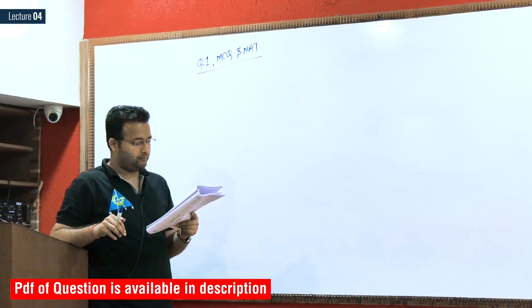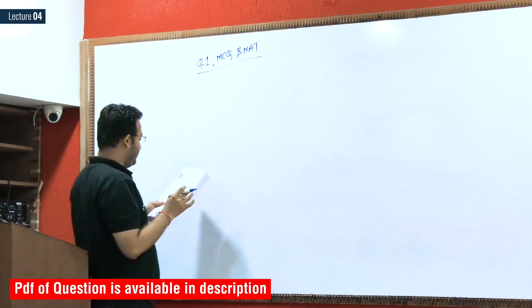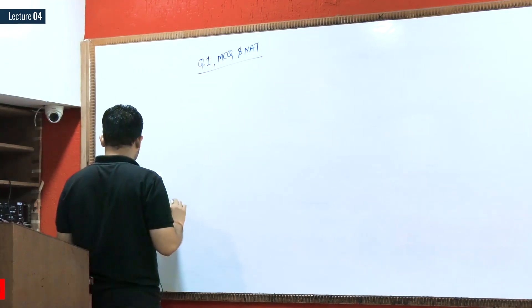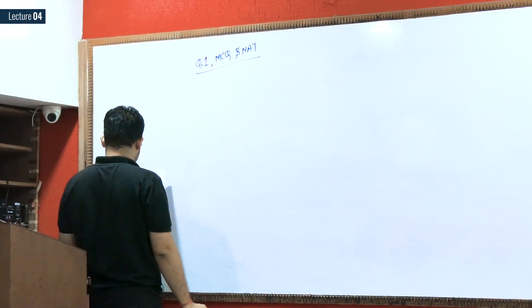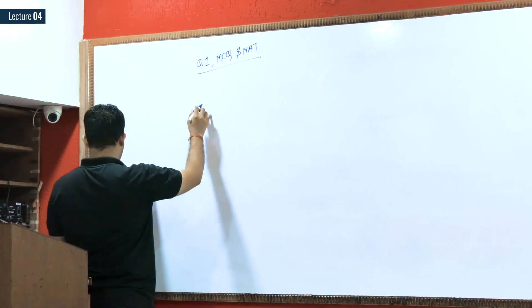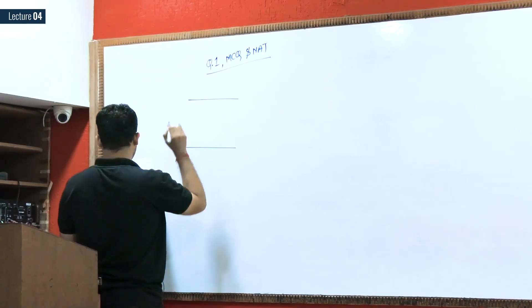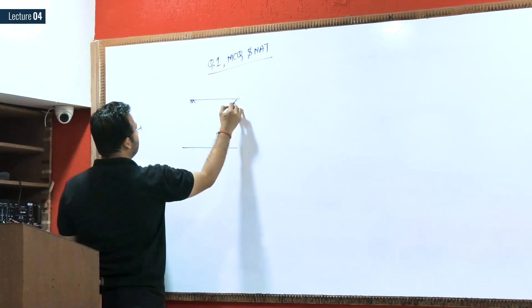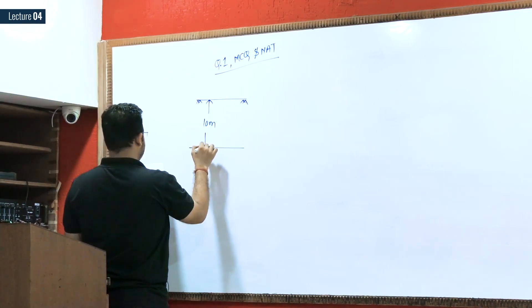The results of a consolidation test on an undisturbed soil sample at a depth of 10 meters below the ground level are as follows. At a depth of 10 meters, they have given me the unit weight.